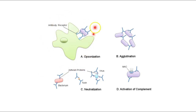Opsonization is flagging for phagocytosis — like planting a flag. The antibody acts as a chemical messenger saying this bacterium or virus needs to be attacked. More antibodies and more white blood cells will come to the area where that cell is opsonized.